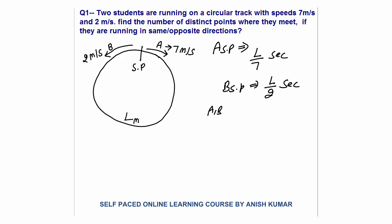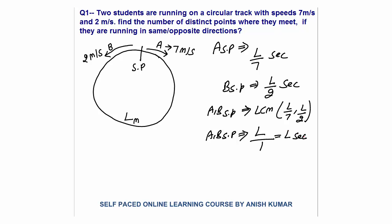When A and B both will be at the starting point, that will be the LCM of these two times — LCM of L/7 and L/2. LCM of a fraction is LCM of the numerators divided by HCF of the denominators. LCM of L and L is L; HCF of 7 and 2 is 1. So after L seconds, both of them will be at the starting point.